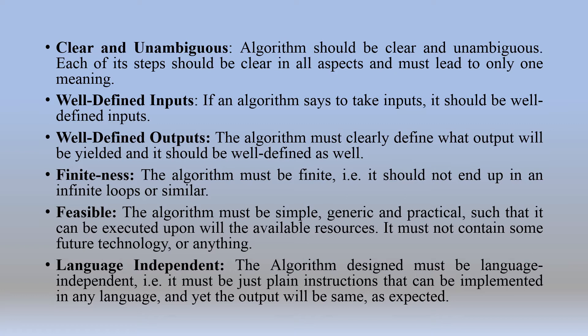You have to get the result, for example, by adding two given numbers. Well-defined inputs: if an algorithm says to take inputs, it should be well-defined inputs. Well-defined outputs: we have to have an aim. Finiteness: it must be finite. Feasible: it must be simple, generic and practical such that it can be executed upon using the available resources — it must not rely on future technology. Language independent: it is not tied to a particular language or program.